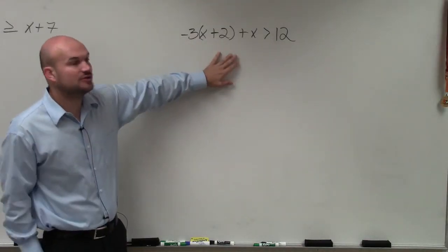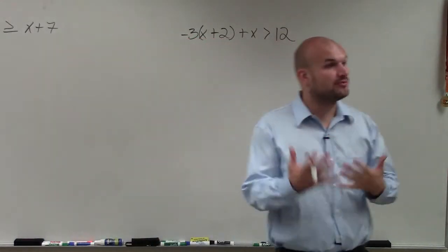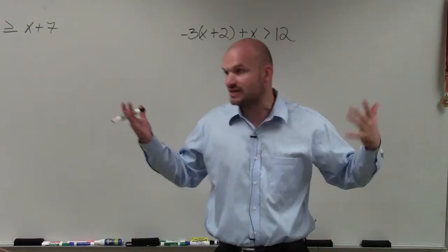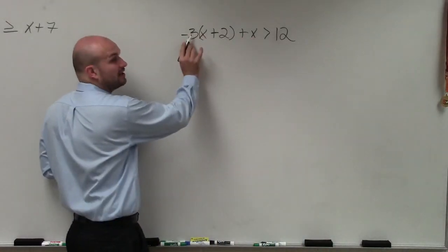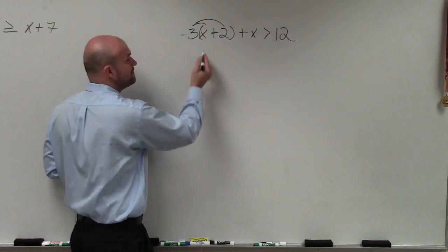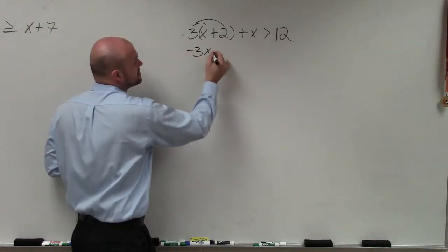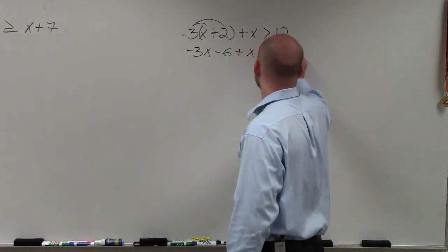The first thing is we need to always go ahead and simplify first things. So whenever we see parentheses, brackets, multiple things, you're going to want to simplify, applying the order of operations. So here, I have negative 3 times x plus 2. So I've got to make sure I multiply by both of them. So therefore, I have negative 3x minus 6 plus x is greater than 12.